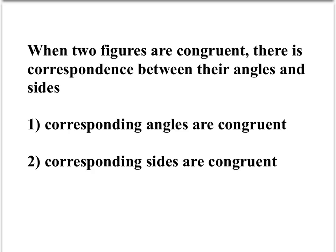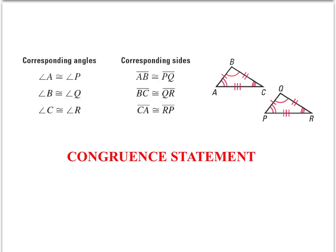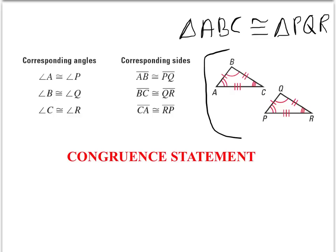When two figures are congruent, there's a correspondence between their angles and their sides. Corresponding angles are congruent, and corresponding sides are congruent as well. We call these congruency statements. So if triangle ABC is congruent to triangle PQR, you could draw these two triangles with that correspondence.